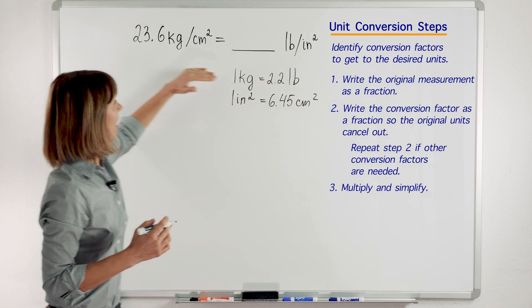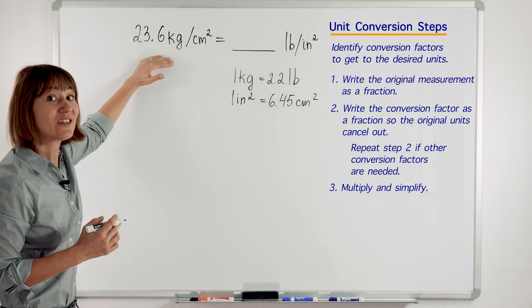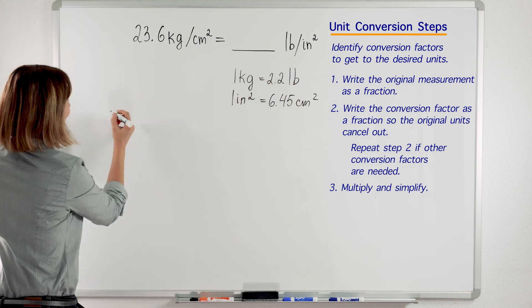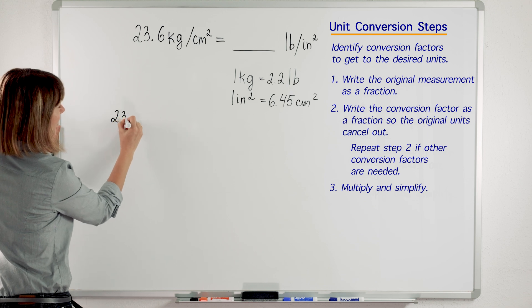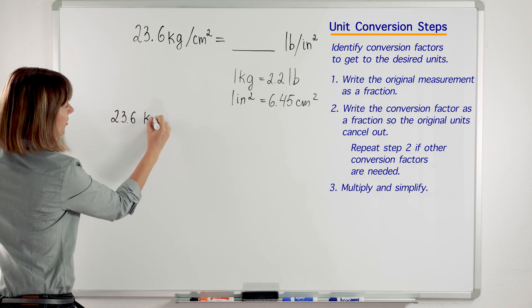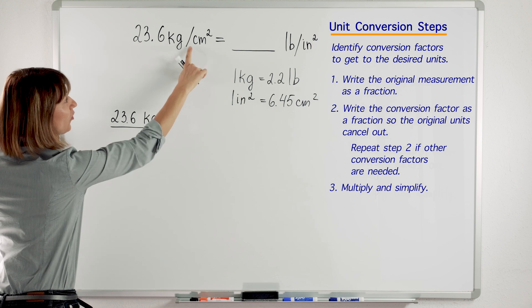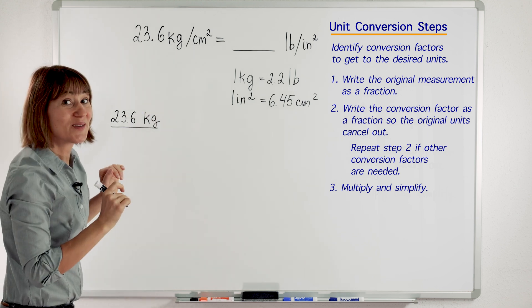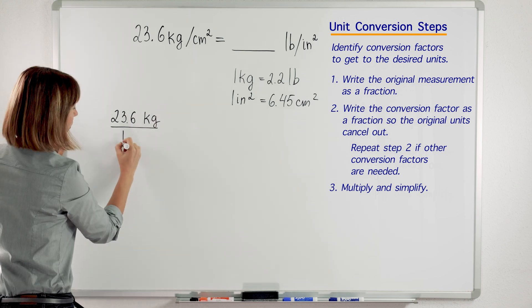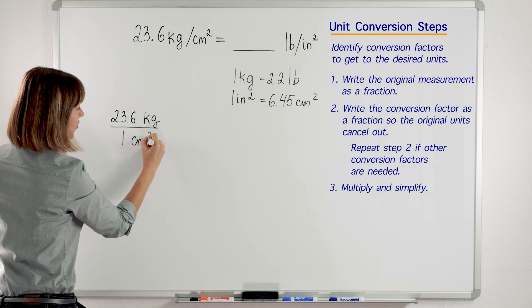The first step is write the original measurement as a fraction. Let's do it. So 23.6 kilograms over, what number do we have in front of centimeters squared? One. So over one centimeter squared.